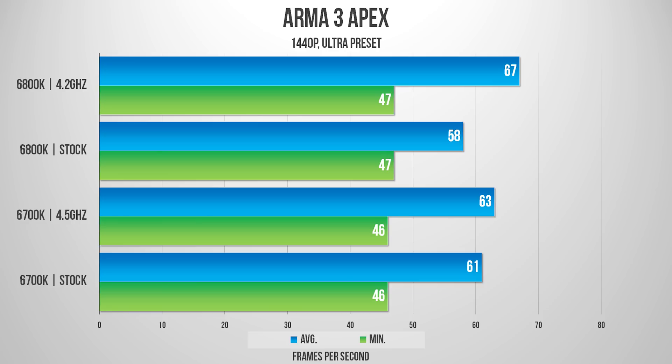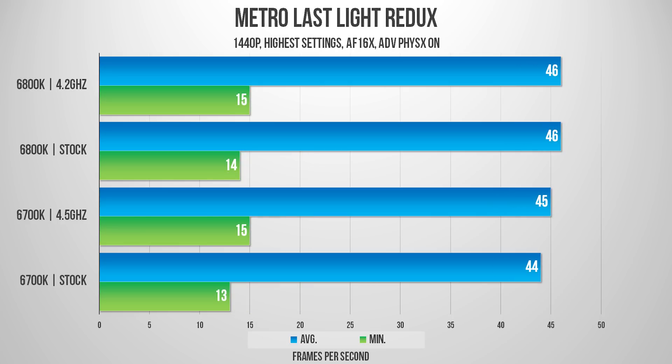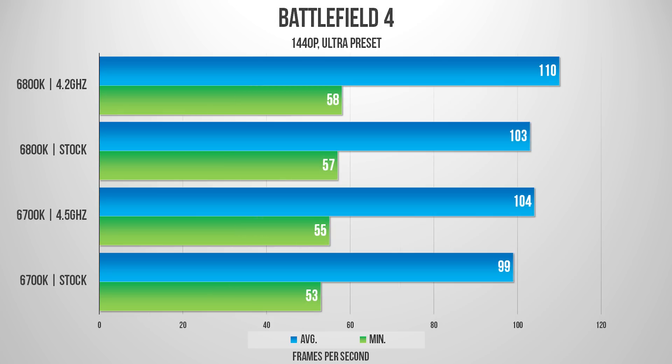Finally, getting into some gaming, there isn't that much of a big difference here. The 6-core showed incremental performance improvement in CPU-heavy titles — up to 6 extra frames per second on average on an overclocked 6800K in Battlefield 4.